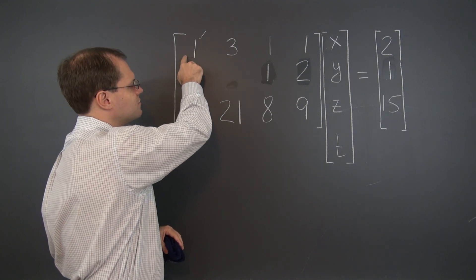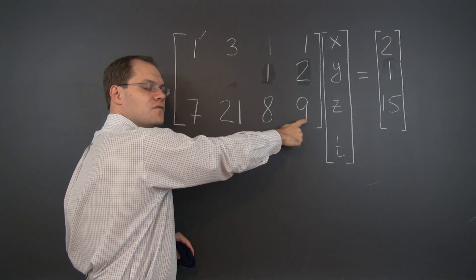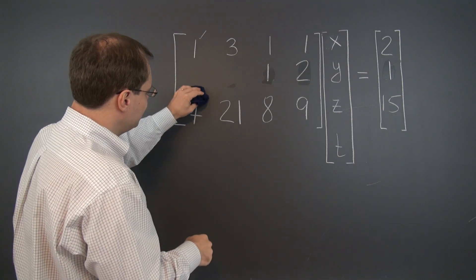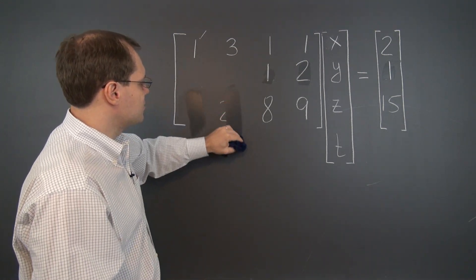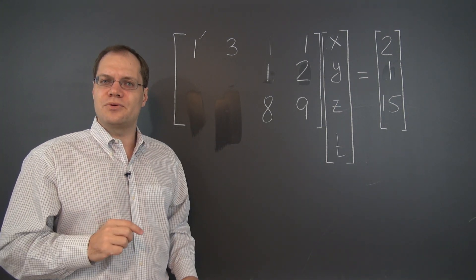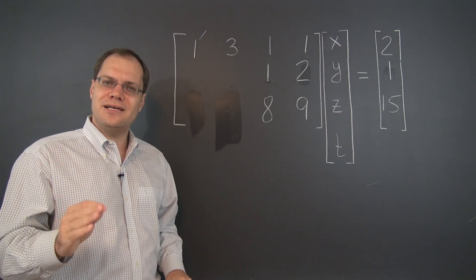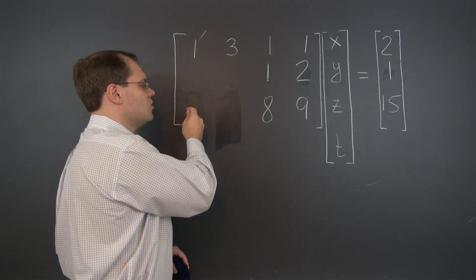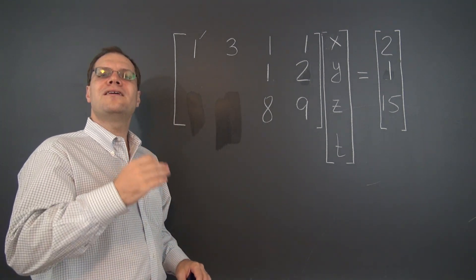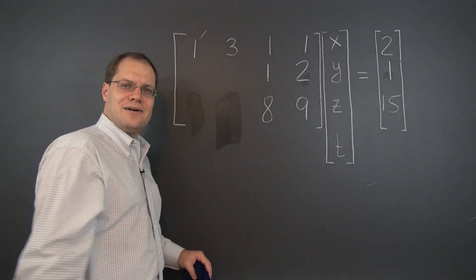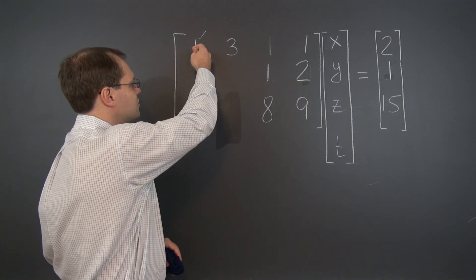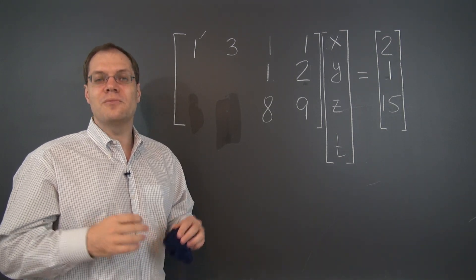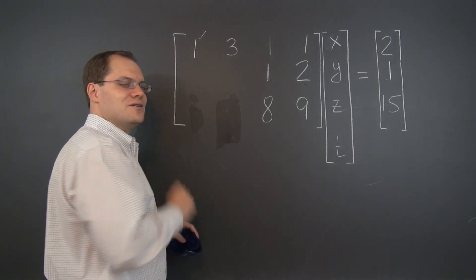Proceeding with Gauss elimination, we subtract seven of the first row from the third row because seven is our target. That produces zero here by design, but also zero here. That's not at all surprising because Gauss elimination preserves the relationships among the columns. If column two was three times column one before, then it will have to be three times column one after Gauss elimination. If after elimination the first column has the form 1, 0, 0, then the second column has no choice but to have the form 3, 0, 0.